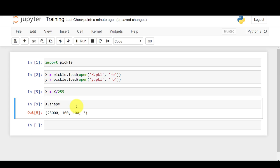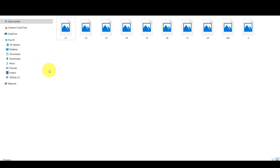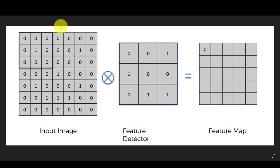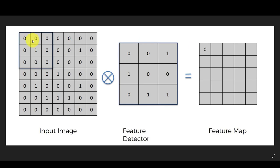Before going into the modeling, we need to understand a bit of theory. I've got a few pictures from the internet to help illustrate. Assume this is our input image with pixel values like 0, 0, 1. The next thing we need is a feature detector — these are 3×3 matrices which help identify specific features, and they get placed over the input image to perform convolution.